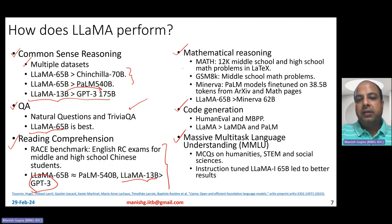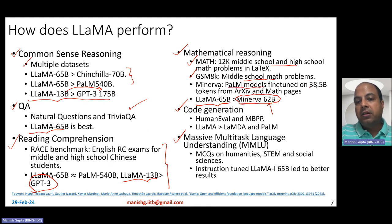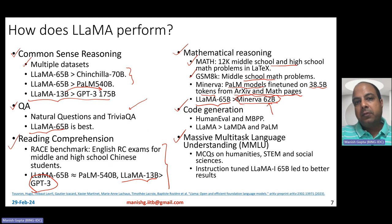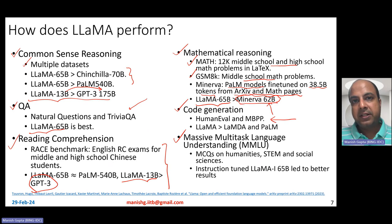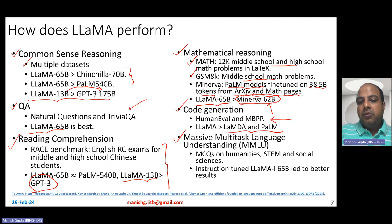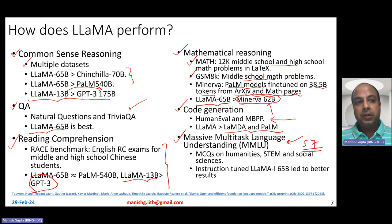On mathematical reasoning (MATH and GSM8K benchmarks), LLaMA 65B outperformed Minerva 62B — a PaLM model specifically fine-tuned on math content. On code generation (HumanEval and MBPP), LLaMA outperformed Google's LaMDA and PaLM. On MMLU — 57 subjects covering humanities, STEM, and social sciences — the instruction-tuned LLaMA-I 65B performed best among the family, demonstrating strong general language understanding.